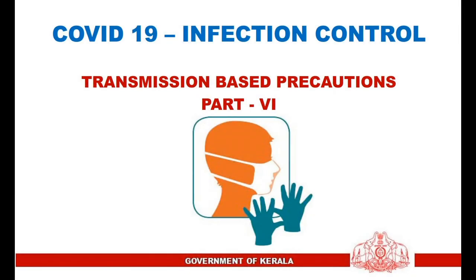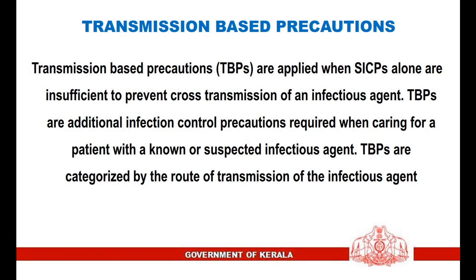COVID-19 Infection Control Part 6: Transmission-Based Precautions. Transmission-based precautions are applied when standard infection prevention and control procedures alone are insufficient to prevent cross-transmission of an infectious agent. They are additional infection control precautions required when caring for a patient with a known or suspected infectious agent, and are categorized by the route of transmission.